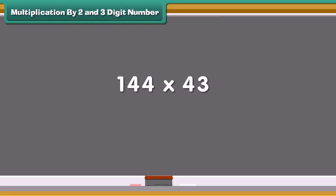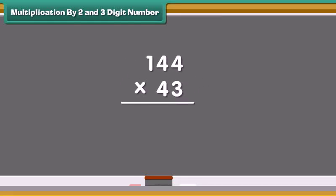Let us multiply 144 by 43. Start multiplication from 1's place. 3 times 4 are 12. Write 2 in the 1's place and carry the 1 forward to the 10's place. Multiply 3 from the number on 10's place, that is 4, equals 12, and add 1 which was carried forward, that is equal to 13. Write 3 in the 10's place and carry the 1 forward to the 100's place. Multiply 3 with the number on the 100's place and add 1 which was carried forward. We write 4 in the 100's place.